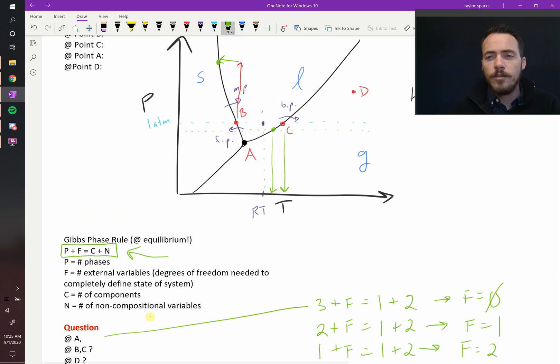Or in other words, if you want to have just gas present, we can choose two different things. We can go down in terms of pressure, down in terms of temperature, and we still have just gas. We have two degrees of freedom.